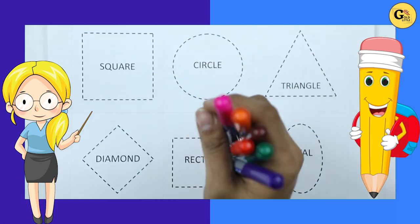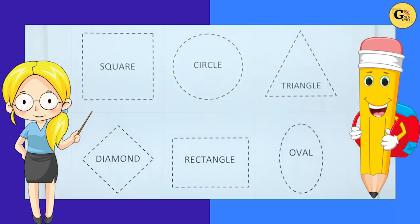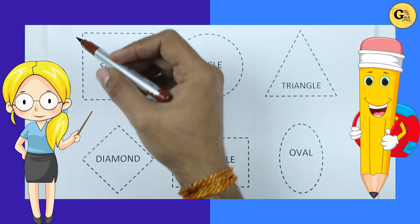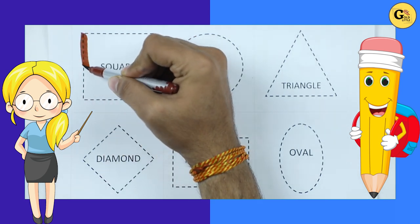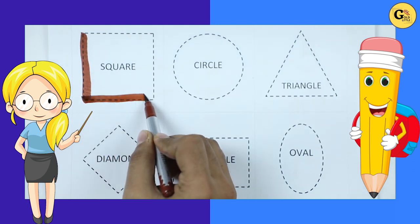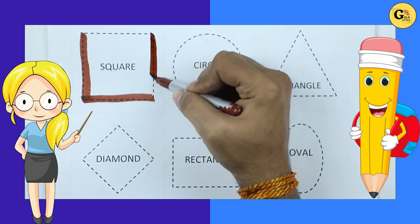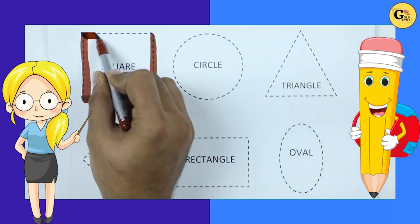Learn shapes. It's square. We draw square with brown color. Square.